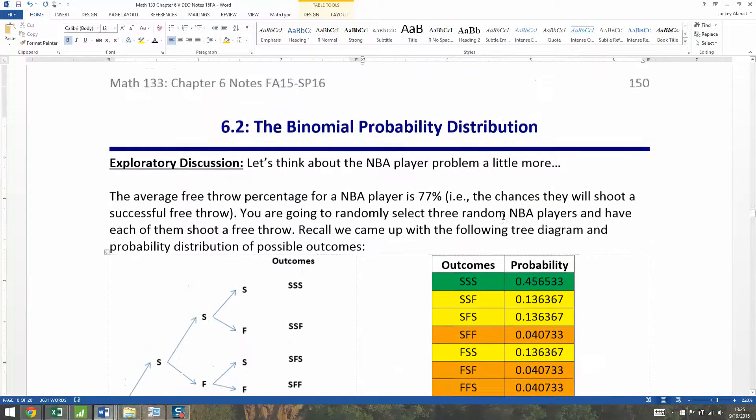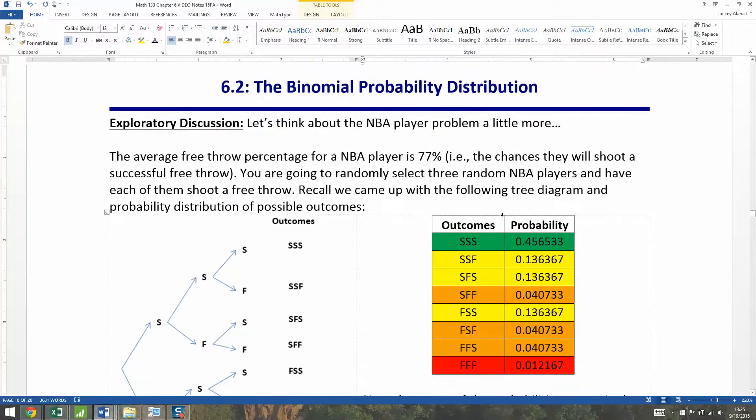Before we get into that, let's remind ourselves what this problem is. This is the NBA problem that we saw in chapter 5. The average free throw percentage for an NBA player is 77%, which means the chances they will shoot a successful free throw is 77%. You're going to randomly select three NBA players and have each of them shoot a free throw. Recall we came up with the following tree diagram and probability distribution of possible outcomes way back in chapter 5.